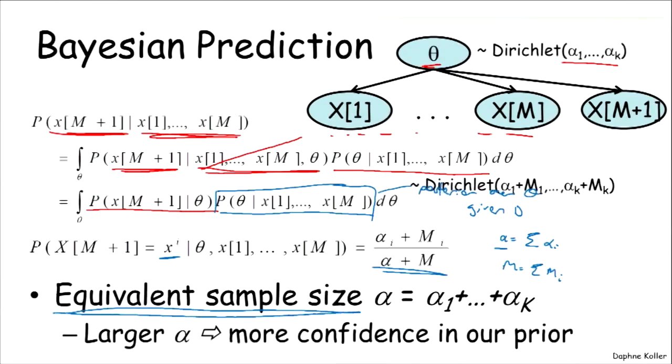And it represents the number of, if you will, imaginary samples that I would have seen prior to receiving the new data, x1 up to xm.